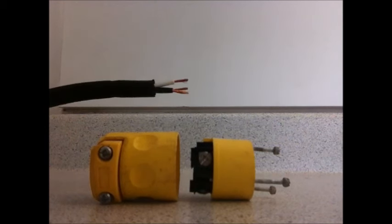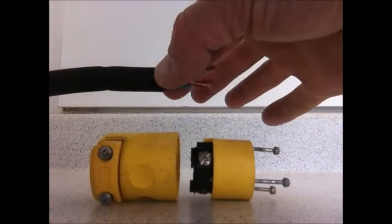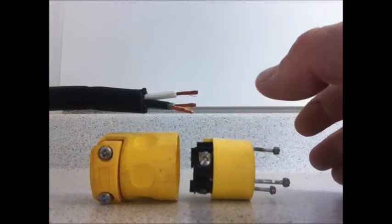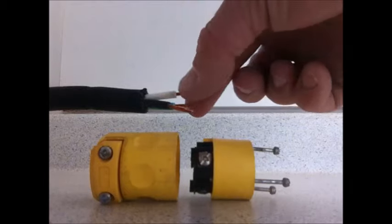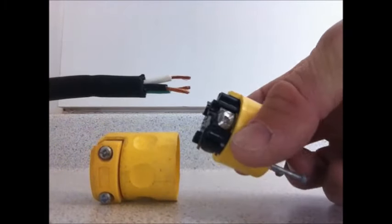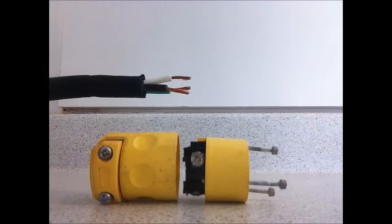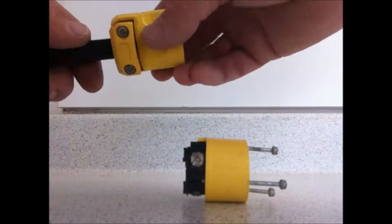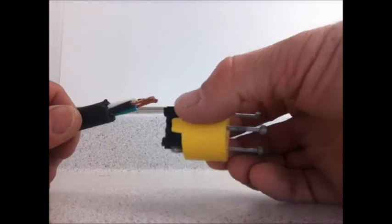So I've laid this connector body out and I use that to determine how much of this outer jacket I need to strip. You want to make sure the outer jacket of the cord extends through the cable clamp on the connector body, and then you just need enough wires to work with here to be able to strip them and terminate them onto the terminals here inside on the inside portion of the female connector body or a cord cap. So make sure you put on your outer shell, make sure that extends through the clamp, and now we're ready to make our terminations.